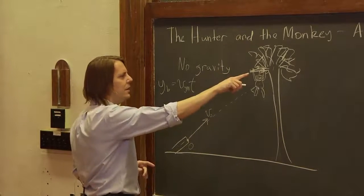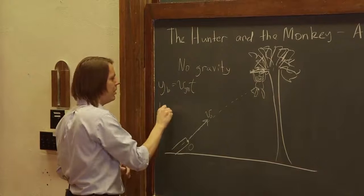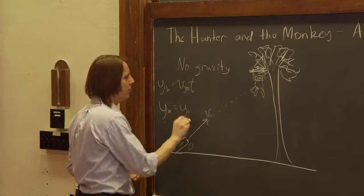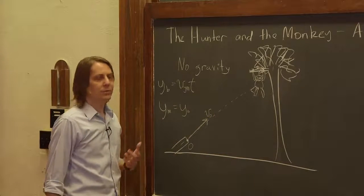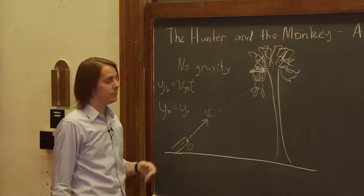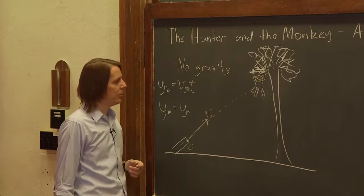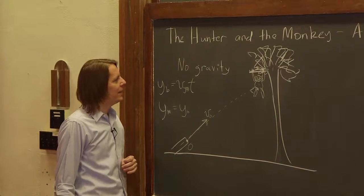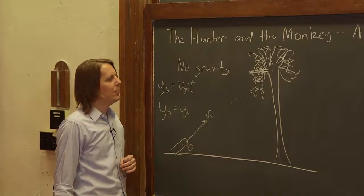Now the monkey, y of the monkey, is going to just stay constant. It's just going to be, we'll call it y-naught, the height of the monkey. And since there's no gravity, it's not going to fall. So y of the monkey is y-naught for all time. He just hangs there or he just floats there in space.